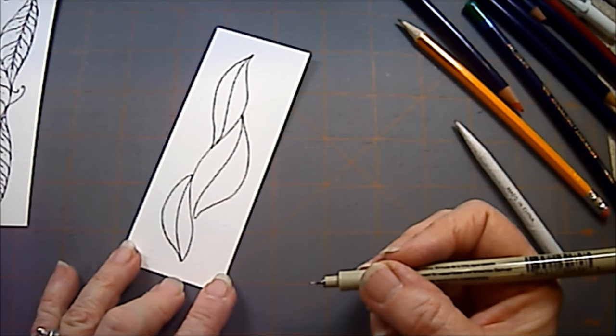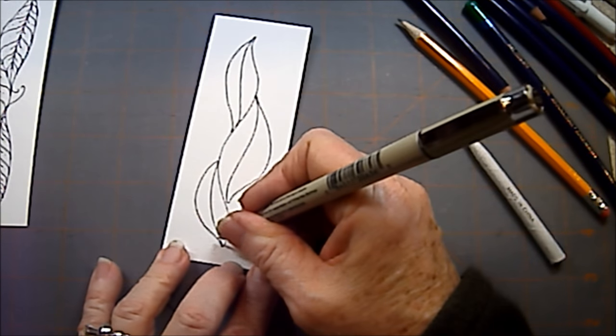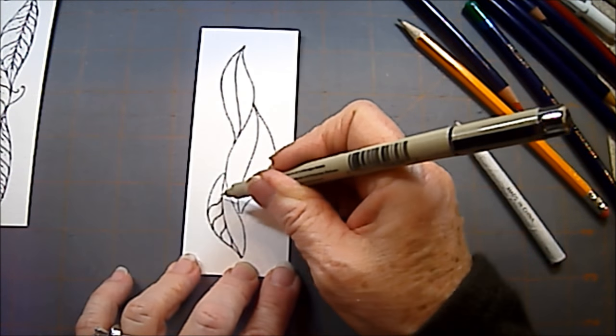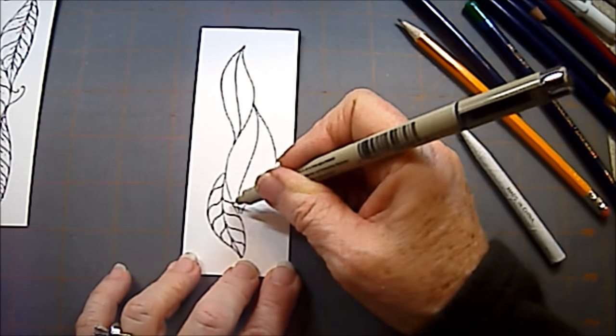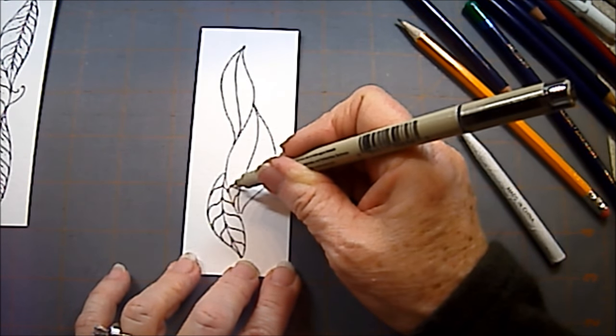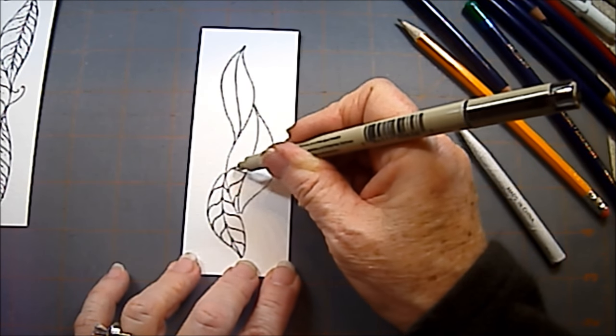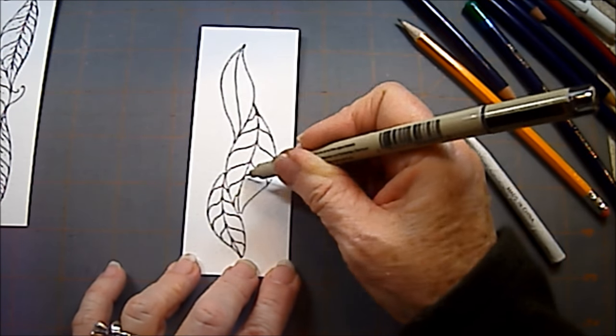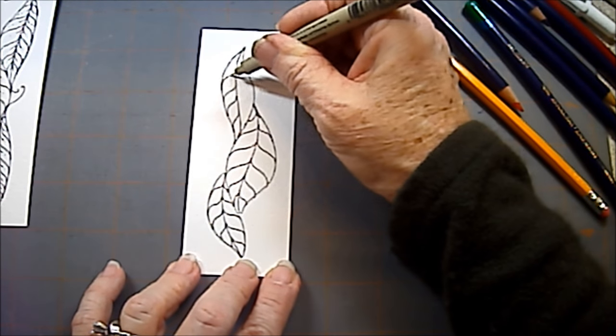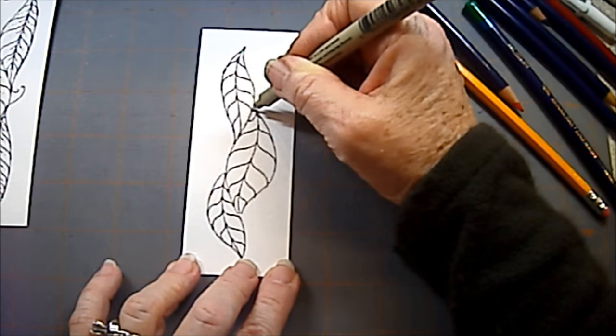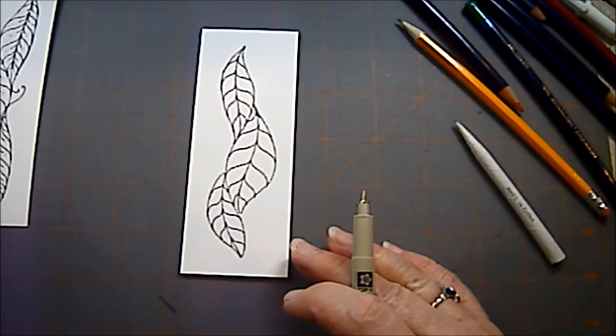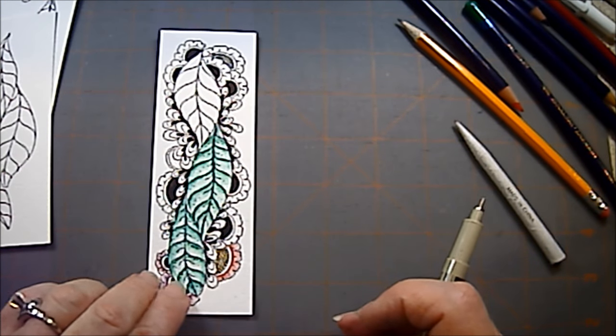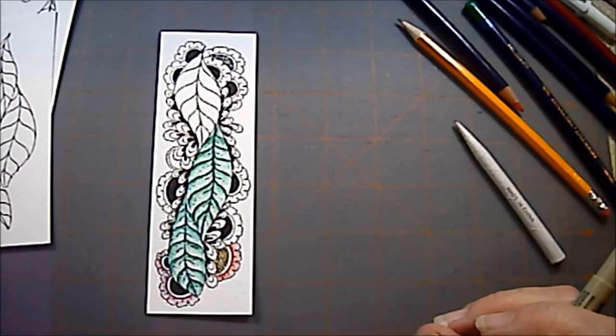So now I have some leaf shapes. So now to do finery here, do my S curve going up. And there we have the leaf shape. Now I will show you how I colored it.